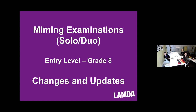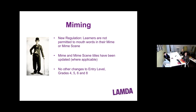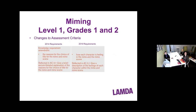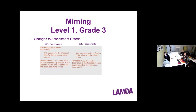Moving on to mime, Entry Level to Grade 8: there is a new regulation — learners are not permitted to mouth words in their mime or mime scene. They can still have facial expressions and react physically, but mouthing words is not permitted, as it's a mime exam focused on physicality. Mime and mime scene titles have been updated where applicable. There are no other changes to Entry Level or Grades 4, 5, 6, and 8. For Grades 1 and 2, learners will now be asked 'how each character is feeling' rather than 'the reasons for the choice of title.'